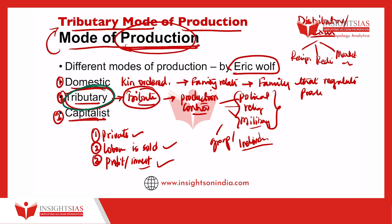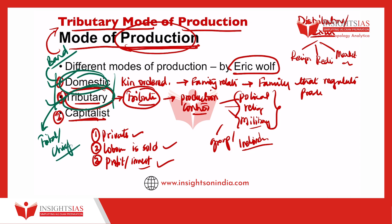In most pre-industrialized or pre-capitalistic societies, we either see domestic or tributary forms of production. In simple societies such as band societies, we mainly see the domestic mode of production. In tribal societies, chiefdoms, and state societies, we see the tributary form — mainly tributary is a characteristic of chiefdom and state-level pre-capitalistic or pre-industrial society.